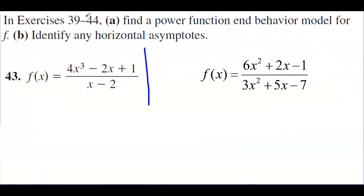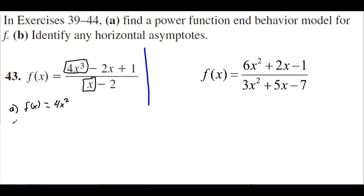In exercises 39 to 44, find a power function end behavior model for f and identify any horizontal asymptotes. So what does this look like on the end — what does it resemble? Well, f of x resembles 4x squared, which is asking the same thing we just talked about. For letter b, identify any horizontal asymptotes: on the ends, this function looks like 4x squared, so it's not leveling out. There are no horizontal asymptotes — none.